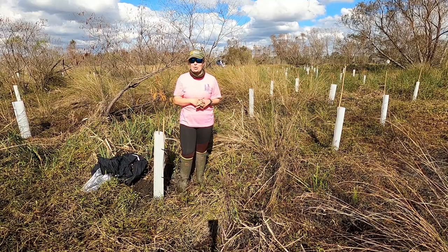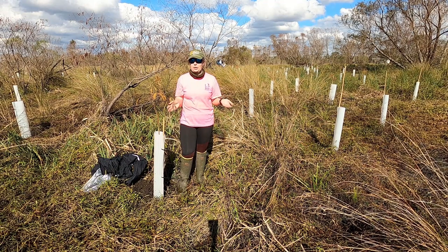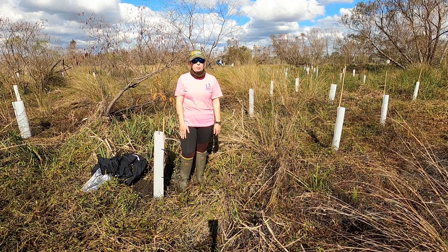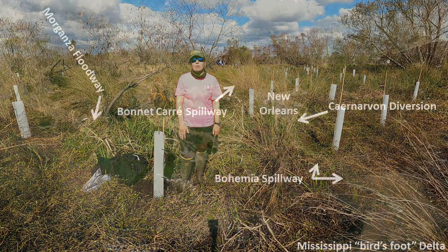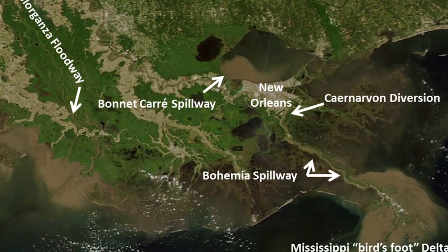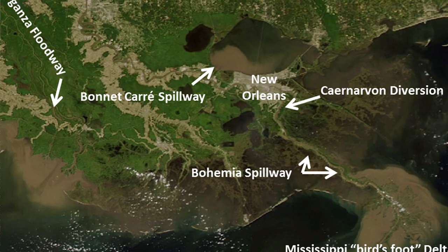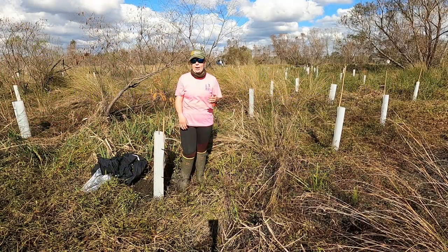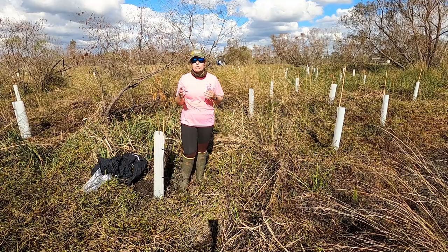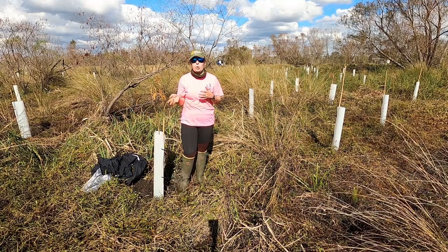I'm Shelby Barrett with the Pontchartrain Conservancy. I'm a coastal scientist in our Coast and Community Program. The area that we're planting at today is near the Carnarvon freshwater diversion, about 15 river miles southeast of the city of New Orleans. Historically, it was a freshwater marsh, but in the past, due to saltwater intrusion, there was a lot of conversion to open water and loss of that freshwater habitat.